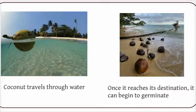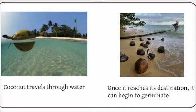Here we have an example of water dispersal. The coconut snaps off the tree and travels through water. Its shell is incredibly water resistant and can last long periods of time in the water. When the coconut reaches its destination, it can finally begin to germinate.